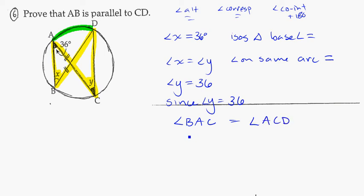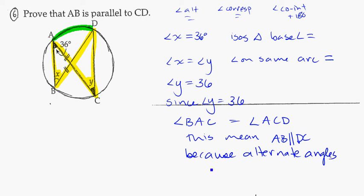And because of that, this means AB must be parallel to DC, because alternate angles are equal. And there's the proof for you.